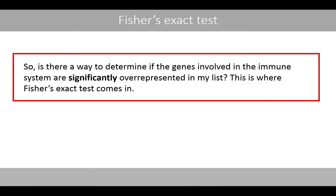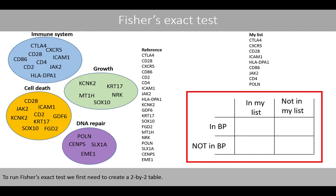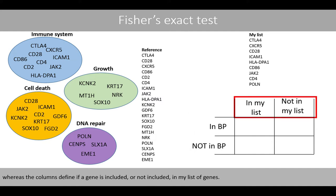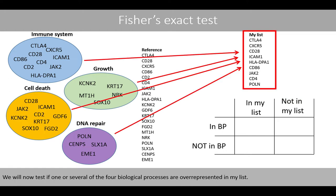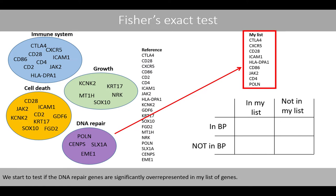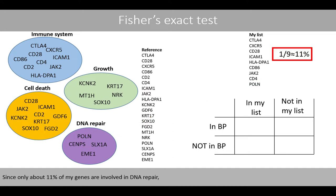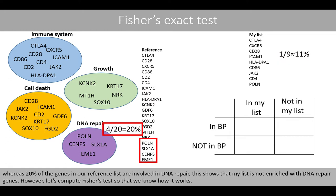So, is there a way to determine if the genes involved in the immune system are significantly overrepresented in my list? This is where Fisher's exact test comes in. To run Fisher's exact test, we first need to create a two-by-two table. The rows define if a gene is included in a certain biological process or not, whereas the columns define if a gene is included or not included in my list of genes. We'll now test if one or several of the biological processes are overrepresented in my list. We start by testing if the DNA repair genes are significantly overrepresented in my list of genes. However, let's compute Fisher's test so that we know how it works.